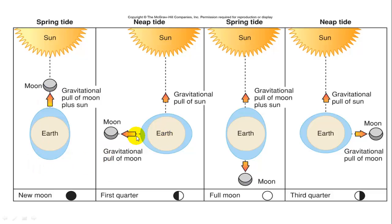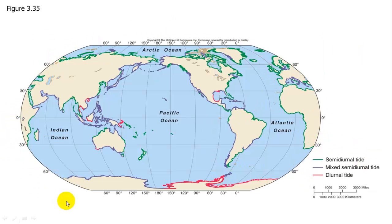The type of tide experienced depends on your position relative to the sun and moon and their gravitational pull on the water. On the East Coast, for example, we experience a semi-diurnal tide — two full tidal cycles per day.